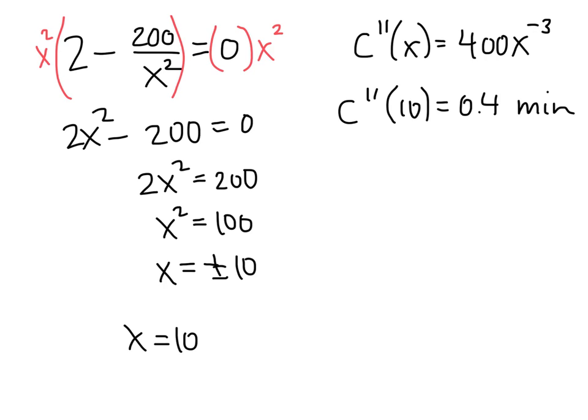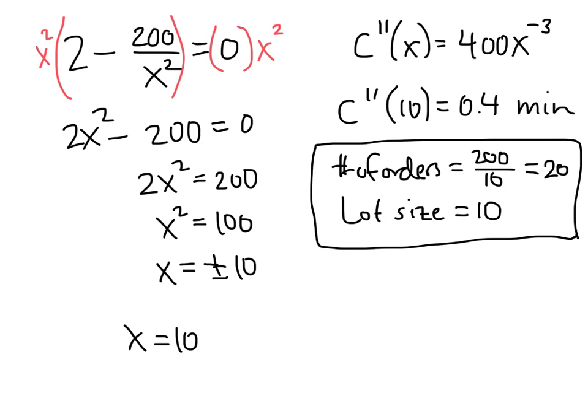And now the only thing left to do is to go back and make sure that we've answered the question. So the question asked, how many times per year should we order bowling balls, and in what lot size? Well, we figured out the lot size, that's 10. And so all we need to do is figure out how often we need to order to make that happen. But we know that the number of orders is 200 divided by x, so that's going to be 200 divided by 10, which is 20. So the solution here is to order 20 times a year, and each time we order to order 10 bowling balls.